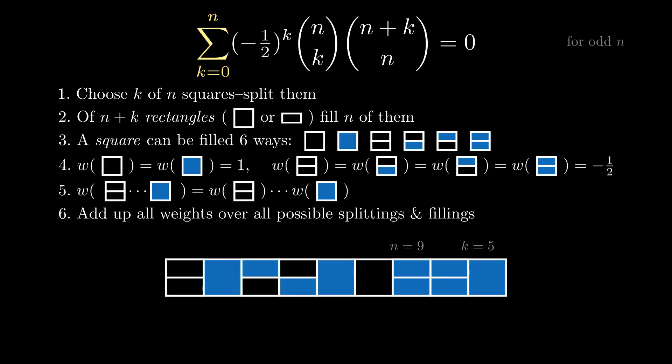The claim is that the total weight of all these configurations balances out to zero. So how on earth will a trijection help us out?